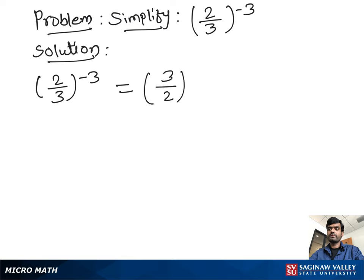Then we get our final answer: 3 cubed is 27 and 2 cubed is 8, so we get 27 over 8.